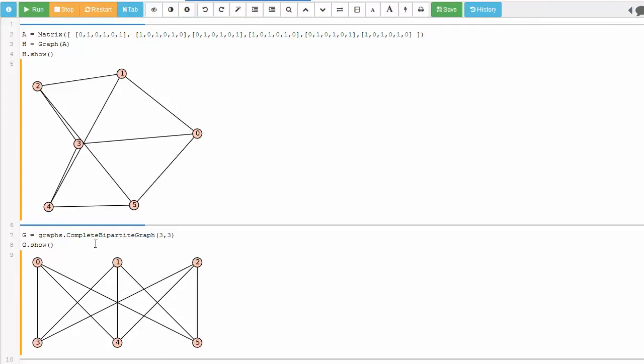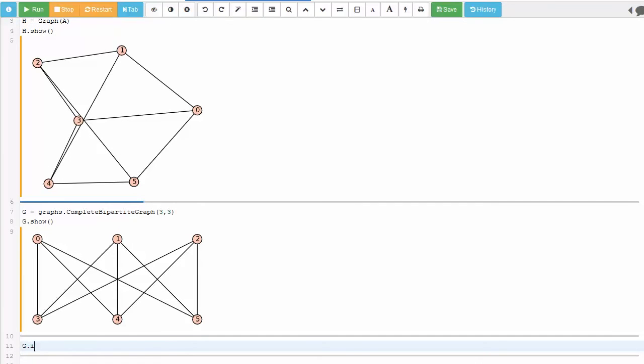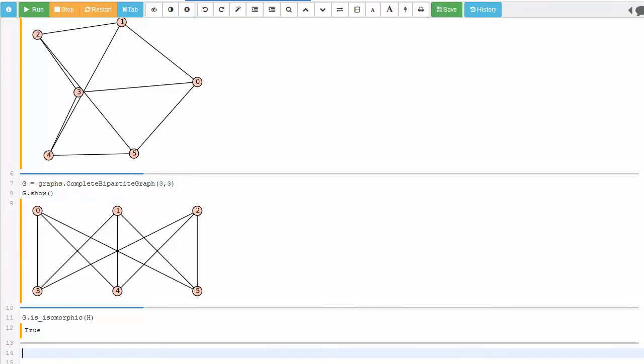Now we want to ask SAGE if these two graphs, which we've called G and H, are isomorphic. In SAGE that's really easy. All you have to do is type G dot is isomorphic to H. And SAGE tells us that it's true.